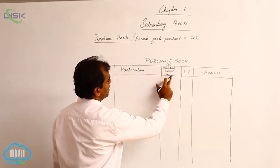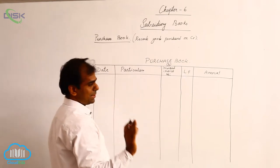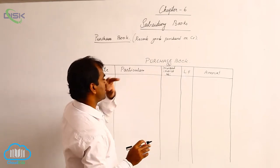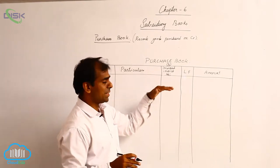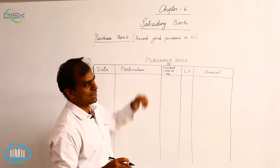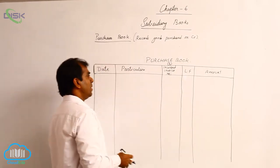For example, for purchase book, the third column is for inward invoice number. We have already discussed what is invoice. So the number which is there on that, we write it here. If in the problem it is given we enter, otherwise we ignore that.